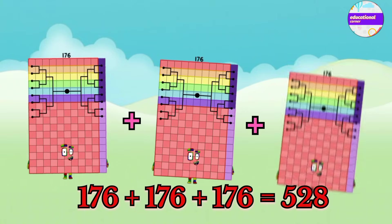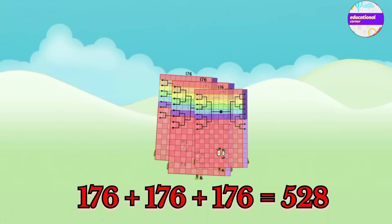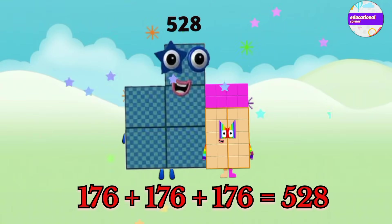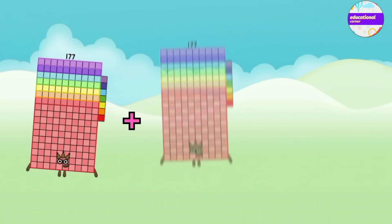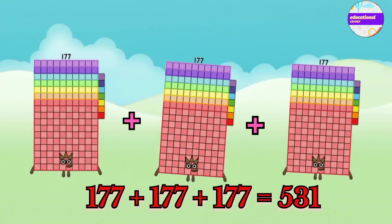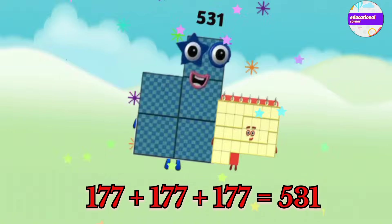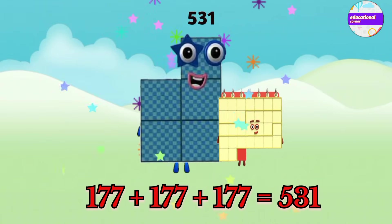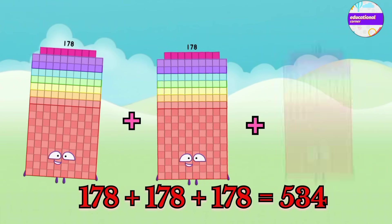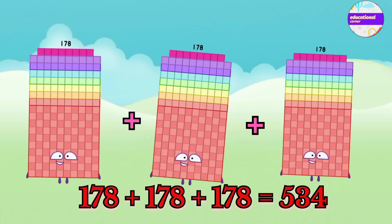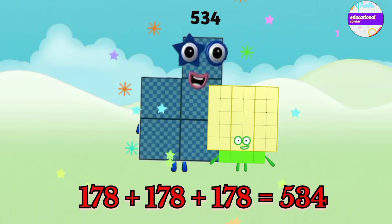176 plus 176 plus 176 equals 528. 177 plus 177 plus 177 equals 531. 178 plus 178 plus 178 equals 534.